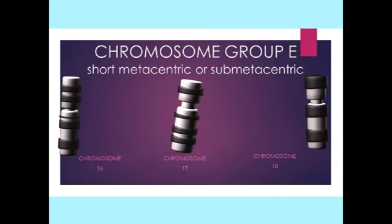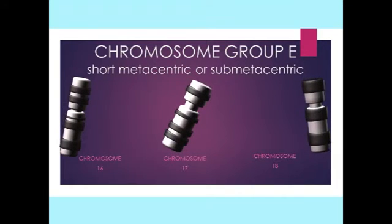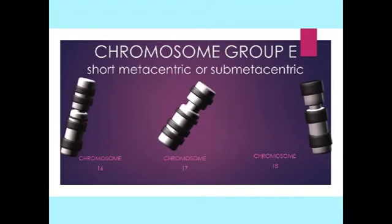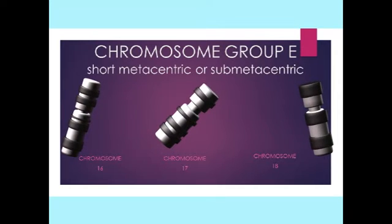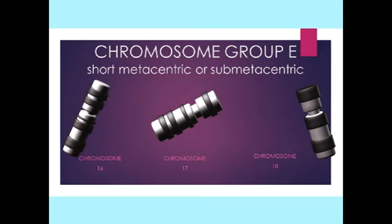Group E chromosomes include chromosomes 16 through 18, which are short and either metacentric in the case of chromosome 16, or submetacentric in the cases of 17 and 18.